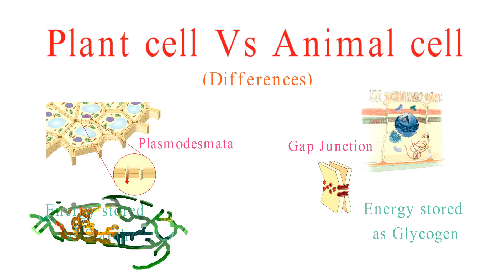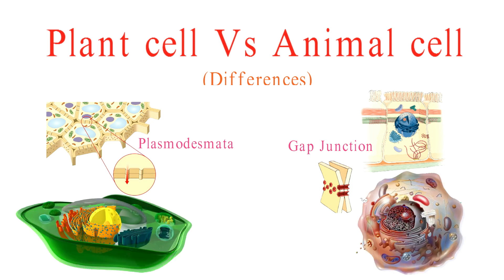In summary, while plant and animal cells share a common eukaryotic foundation, they've evolved unique adaptations to suit their specific roles in the diverse world of life. Understanding these differences and similarities sheds light on the remarkable complexity of cellular biology. Thank you for joining us on this journey into the intricate world of plant and animal cells. I hope you enjoyed this video.